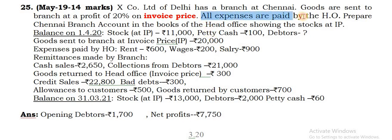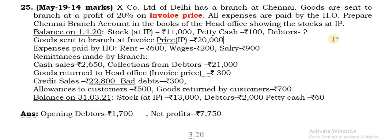All expenses are being paid by the head office. You are asked to prepare the Chennai branch account in the books of the head office, showing stocks at invoice price (IP). Opening stocks are given, there are opening assets - stock and petty cash. But opening debtors are not given; that you have to calculate. Goods sent to branch at invoice price is given.